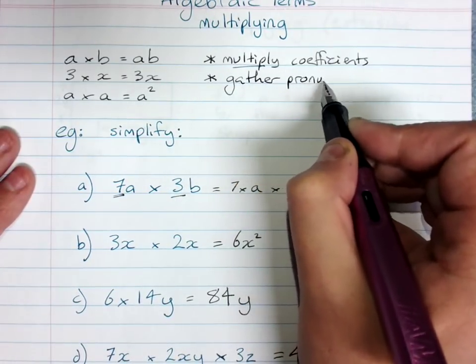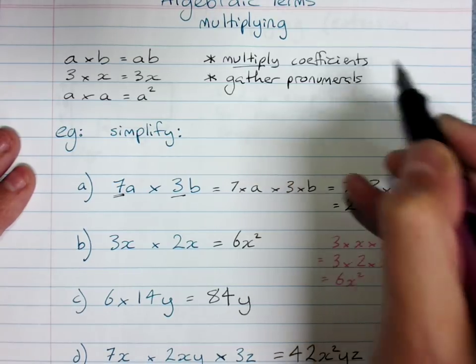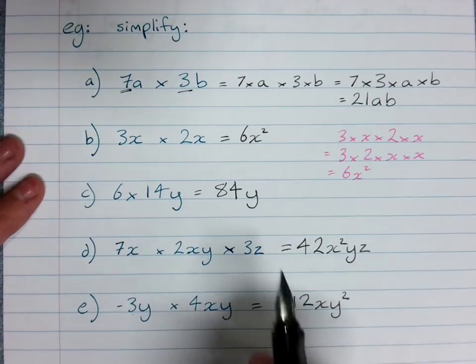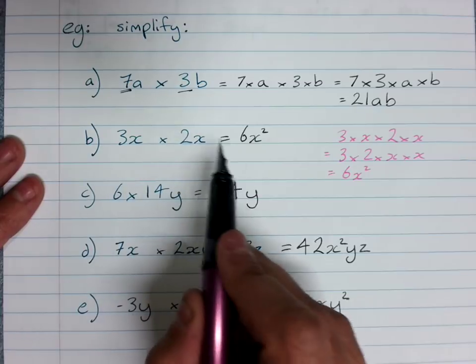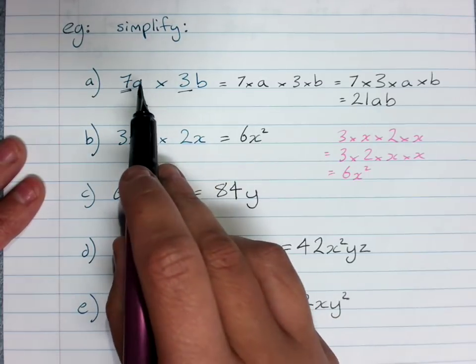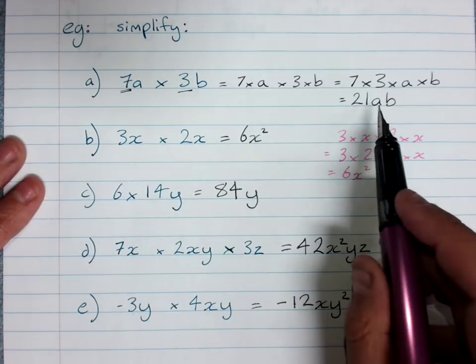So we gather the pronumerals. If as it was here, it was x times x, we'd write x squared. If it was a times b, we'd write ab.